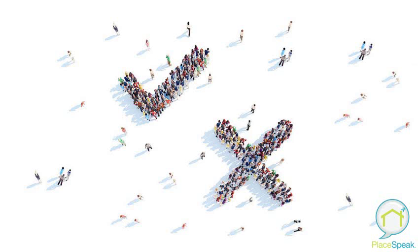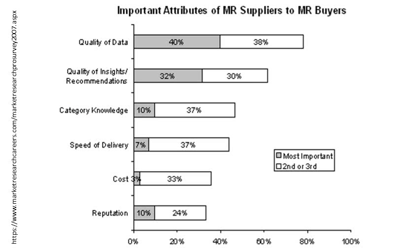Another difference between consultation and research polling is that in a consultation, self-selection is a strength. The most engaged and informed members of the community should be more involved, whereas in a research context, any kind of sampling bias invalidates the results insofar as they reflect the general population. Market research buyers and suppliers look for quality of data, quality of insight, speed of delivery, cost-effectiveness, and reputation — and all these areas are addressed by PlaceSpeak's approach to collecting feedback from participants. We'll explore how all these factors are satisfied in the following case study.